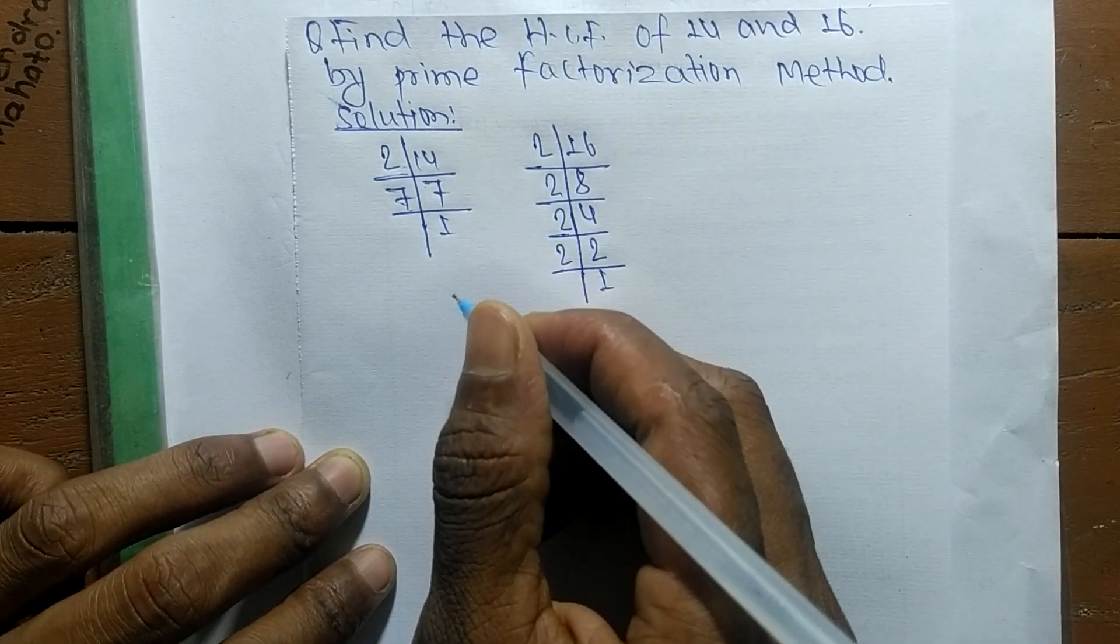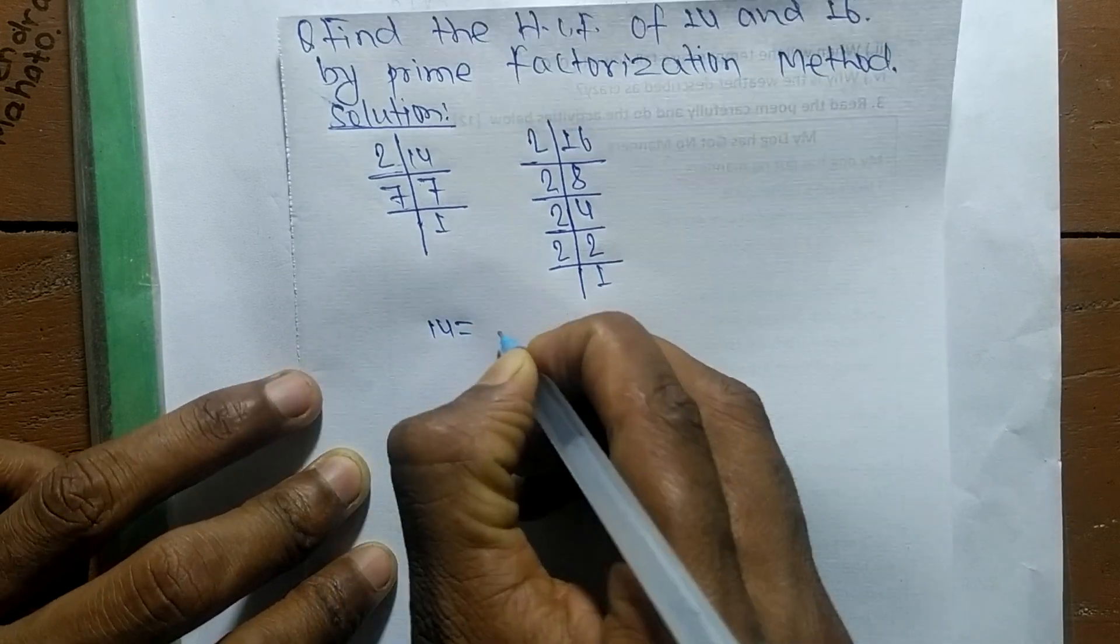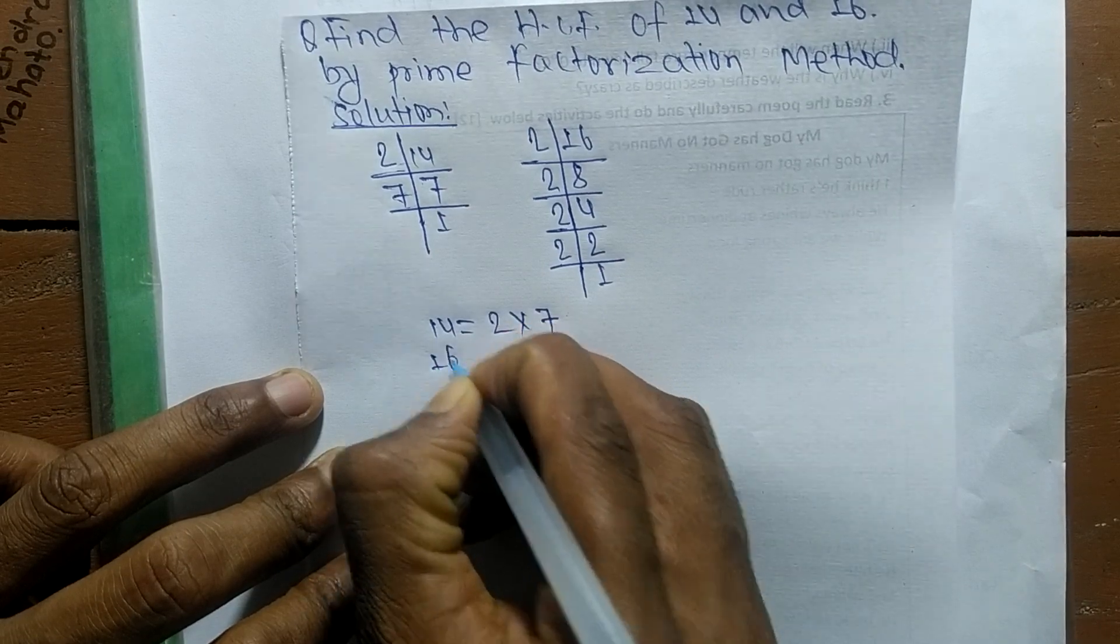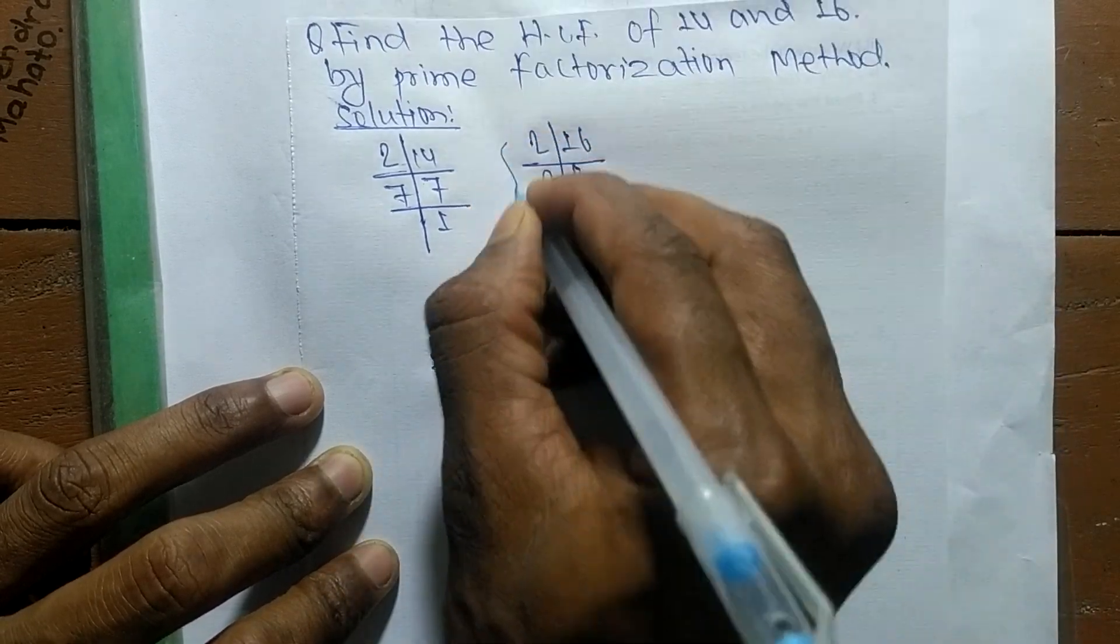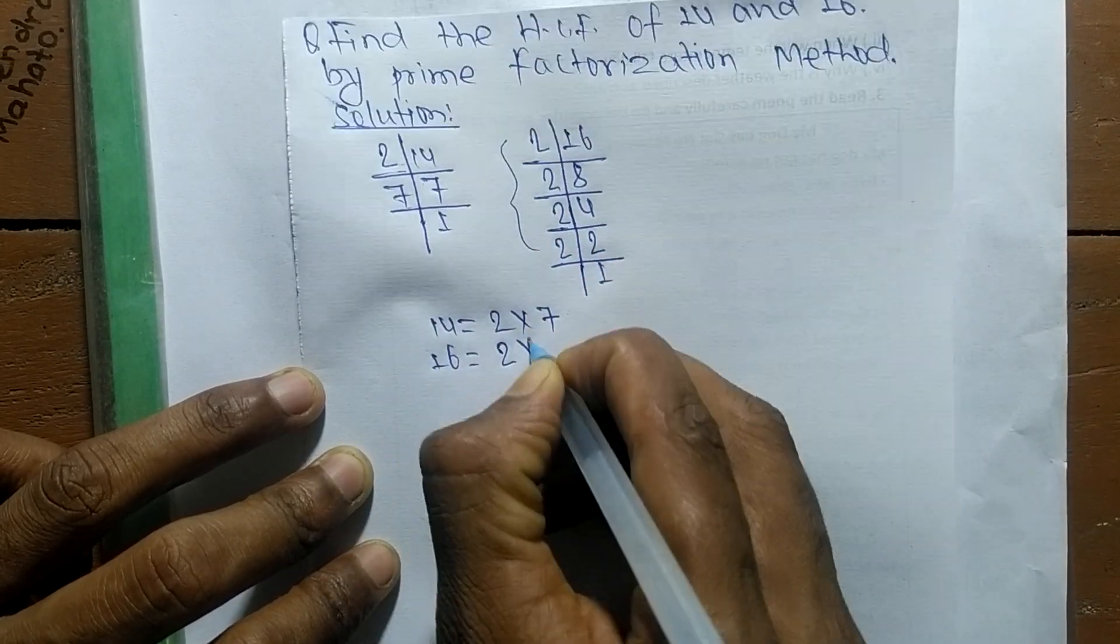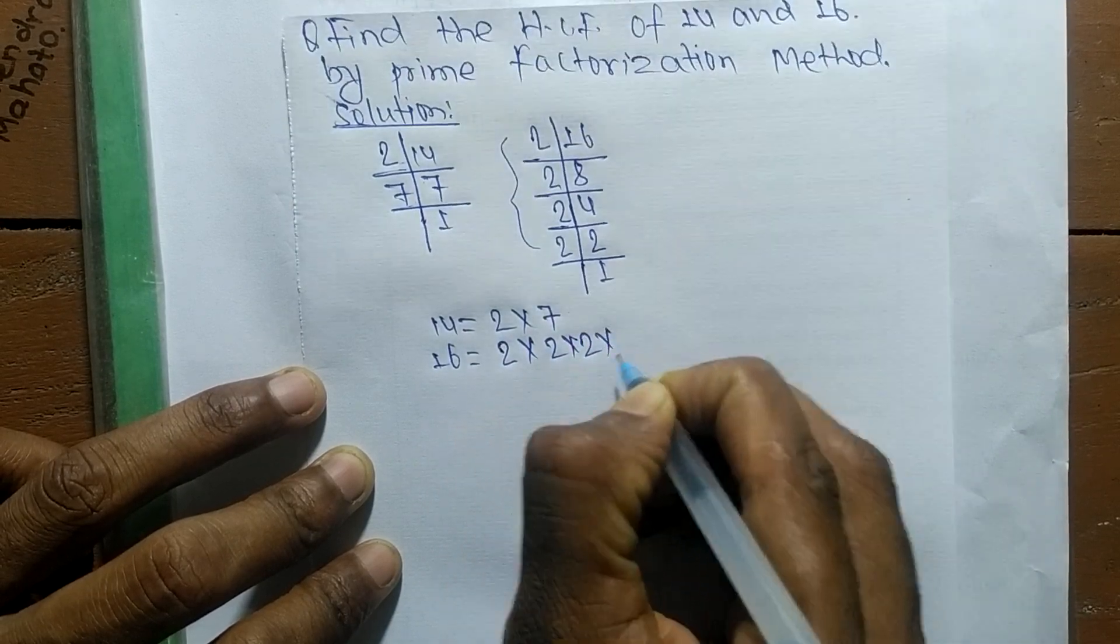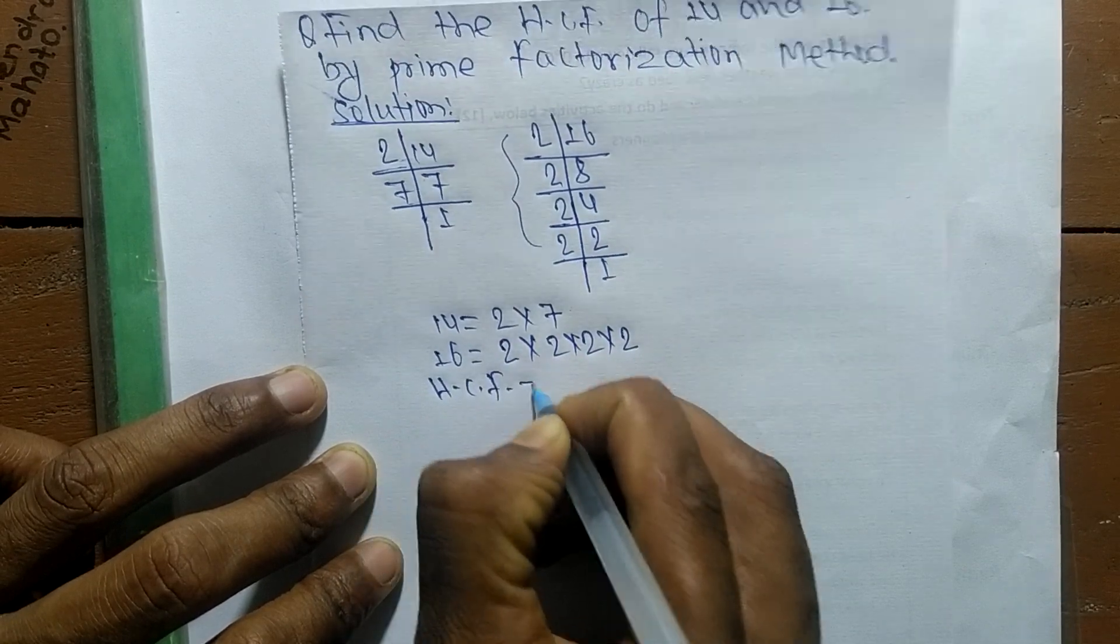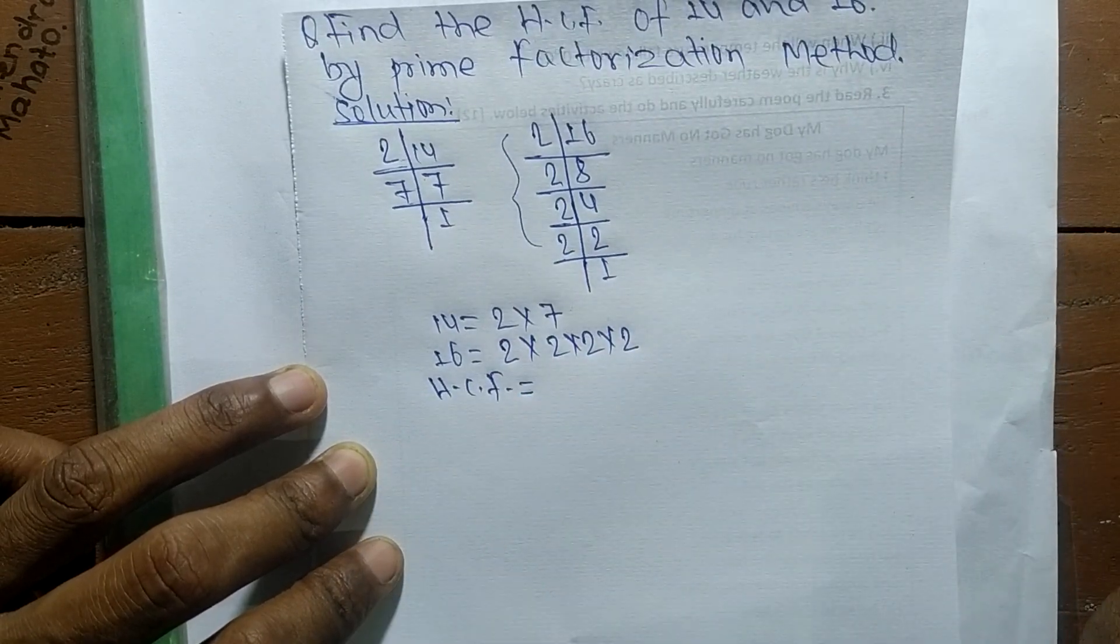From these prime factors we can write 14 is equal to 2 times 7, and 16 is equal to 2 times 2 times 2 times 2. So its HCF is equal to, now we have to find out the common factors in the prime factors of 14 and 16.